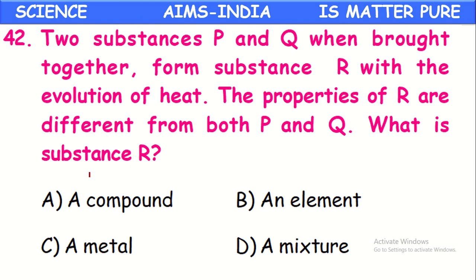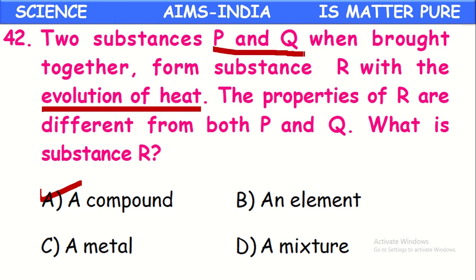Two substances P and Q when brought together form substance R with evolution of heat. The properties of R are different from both P and Q. What is substance R? If a resultant component has entirely different properties from the original components, it is called a compound. R will be a compound. If it were a mixture, R's properties would be a mix of P and Q's properties. But here the properties of R are completely different, and R is formed with evolution of heat — this happens only in chemical reactions. So P and Q are chemically combined and R is a compound.